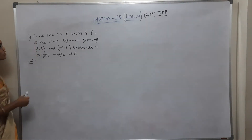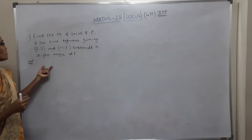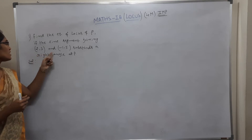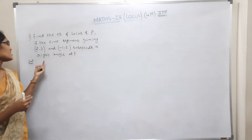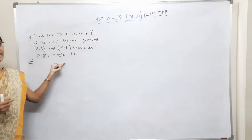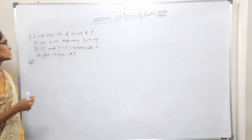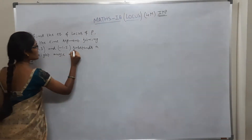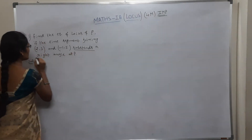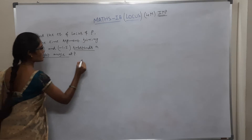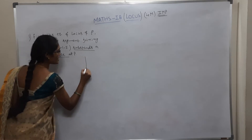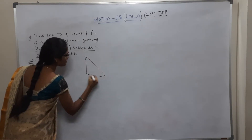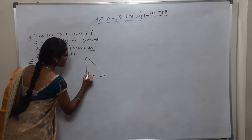See the question. Find the equation of the locus if the line segment joining A(2,3) and B(-1,5) subtends a right angle at P. The given condition here is that it subtends a right angle, forming a right angle triangle at P.